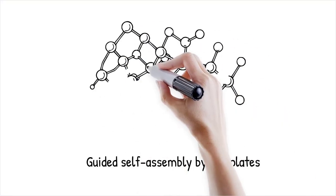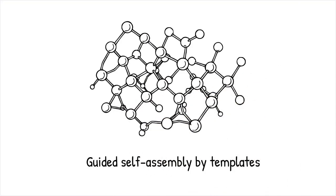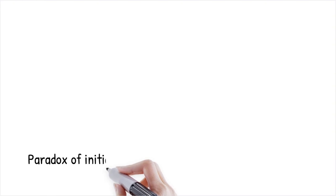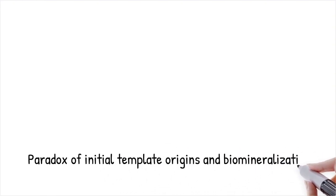In many cases, self-assembly is guided by pre-existing templates, where molecules align themselves based on the structure of a substrate or molecular scaffold. These templates provide spatial constraints that help organize molecules into precise configurations, reducing the likelihood of errors and increasing efficiency. However, this raises the paradox of the origin of initial templates. If self-assembly requires a guiding structure, how did the first highly ordered molecular assemblies arise?